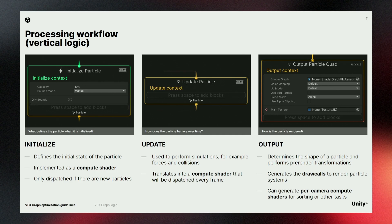Let's take a look at the contexts used by a particle system. First, we have the initialize context. This one is executed only when we have new particles, and only on the new particles, to set the initial values for them. Then we have the update context, which translates into a compute shader that executes every frame for all the particles of the system. Finally, we have the output context, which is in charge of rendering your particles and determines their look. In some cases it can also generate a compute shader for per-camera operations like sorting or motion vectors.